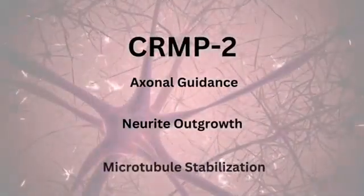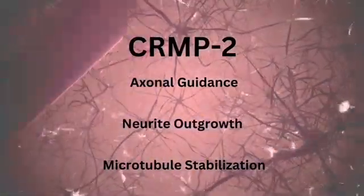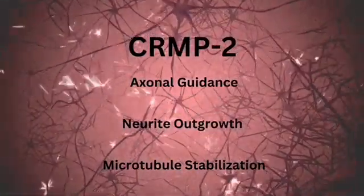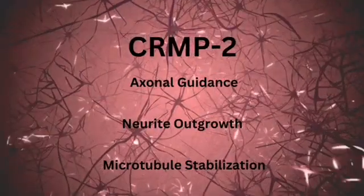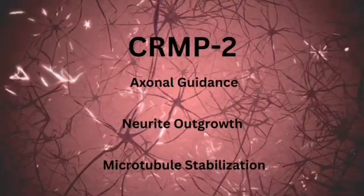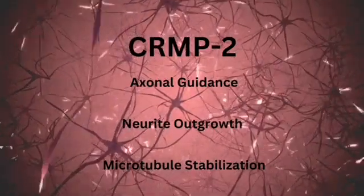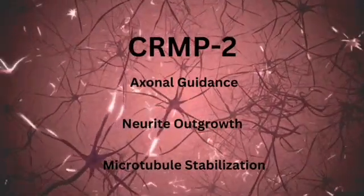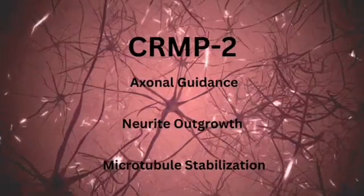Collapsin response mediator protein 2, or also known as CRIMP2 protein, performs a vital role in axonal guidance, neurite outgrowth, and microtubule stabilization during both neural development and regeneration.